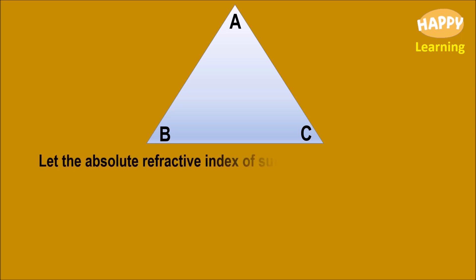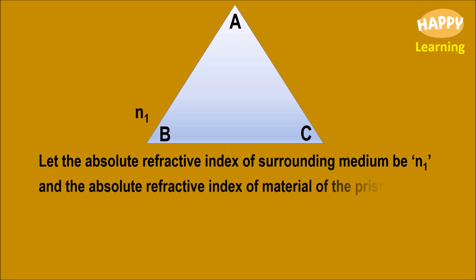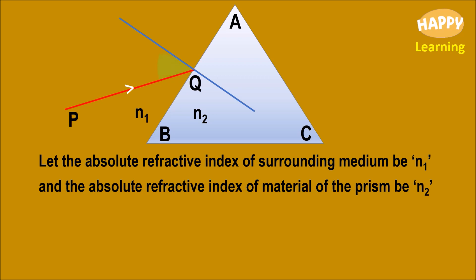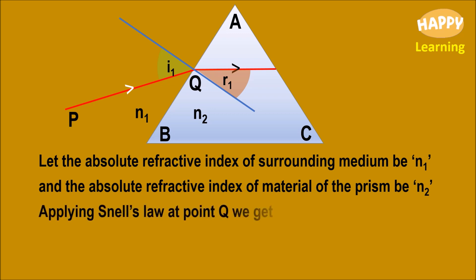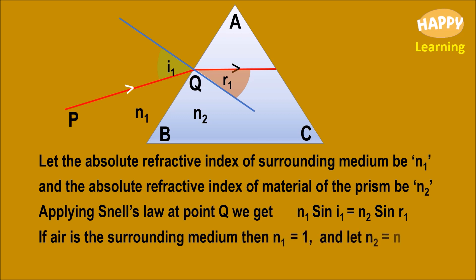Let the absolute refractive index of the surrounding medium be N1, and the absolute refractive index of the material of the prism be N2, as represented in the diagram. PQ is the incident ray with angle of incidence I1, and after refraction the angle of refraction is R1. Applying Snell's law at point Q, we get N1 sin I1 equals N2 sin R1. If air is the surrounding medium, then N1 equals 1, and let N2 equal N. Then sin I1 equals N sin R1. Let this be equation number 4.